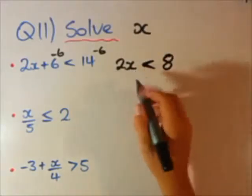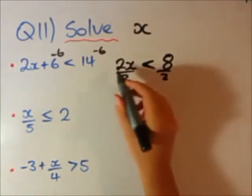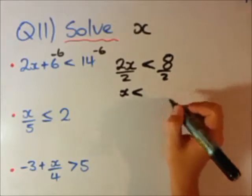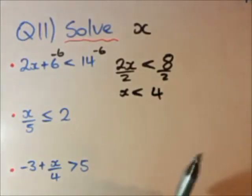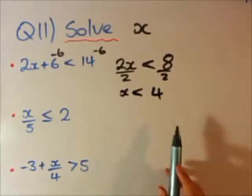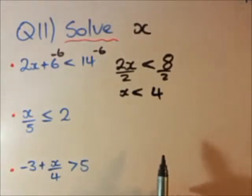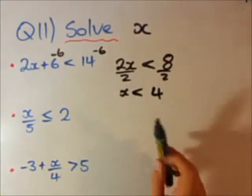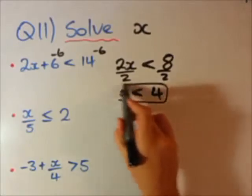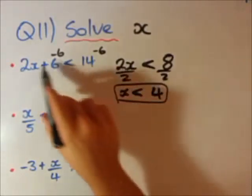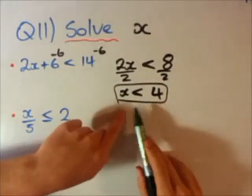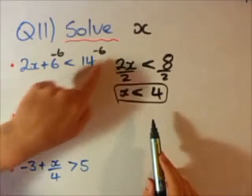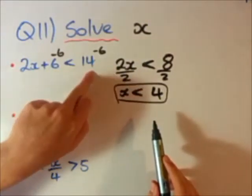We want to get x by itself because we're solving for x. So we can minus 6 from this side, minus 6 from that side. We're left with 2x, and let's just put this thing, but in our head we think it's still an equal sign. 14 minus 6 is 8. Now we want to get x by itself, so we can go divided by 2, divided by 2. x is... 8 divided by 2 is 4. So far we've been used to saying this would be x equals 4. But in these inequality questions, our answer is actually x is less than 4.